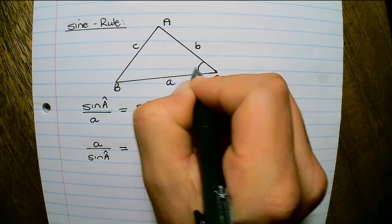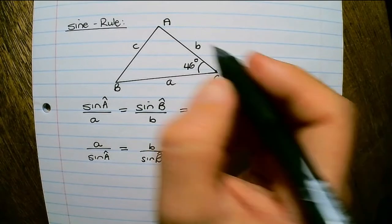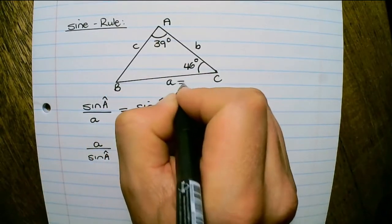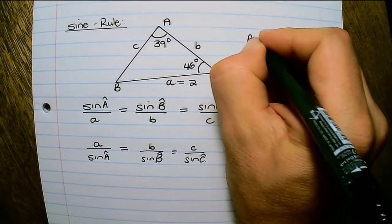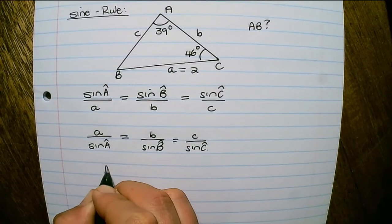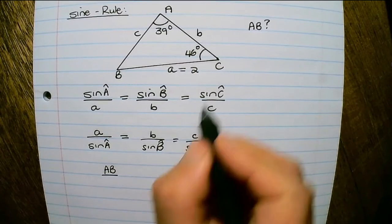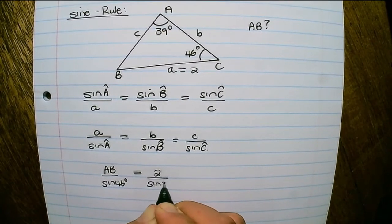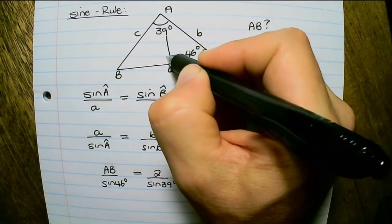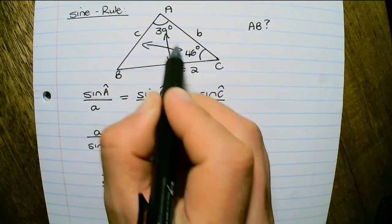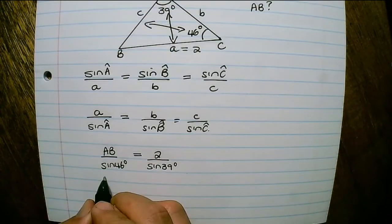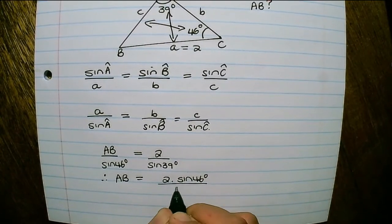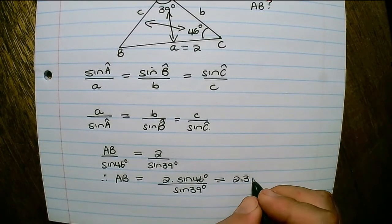For example, let angle C equal 46 degrees, angle A equal 39 degrees, and BC equal 2 units, and we want to find the length of AB. So AB (lowercase c) over sine 46 equals 2 over sine 39, using lengths and angles as opposite pairs to create our ratio. Therefore AB equals 2 times sine 46 degrees over sine 39 degrees, which equals 2.3 units.